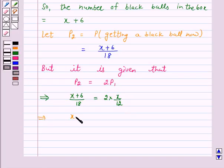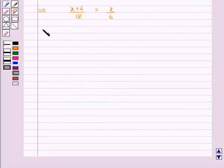So this implies X plus 6 upon 18 is equal to X upon 6, and this implies X plus 6 is equal to X upon 6 times 18.